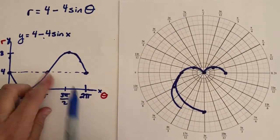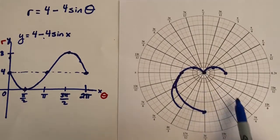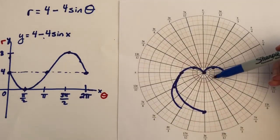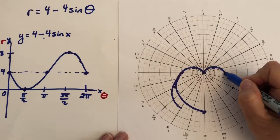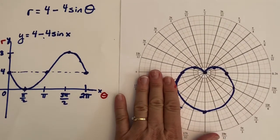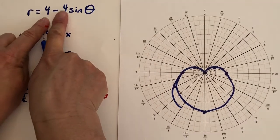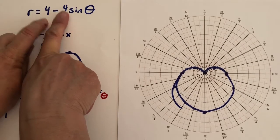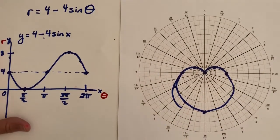From 3π over 2 to 2π, the r values are getting smaller again. At 11π over 6, I'll have that same value of 6. Drawing this curve, we have our limaçon — and this happens to be the special limaçon called the cardioid. When these two numbers are the same — a 4 and a 4 — we end up with a cardioid.